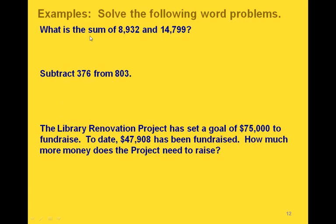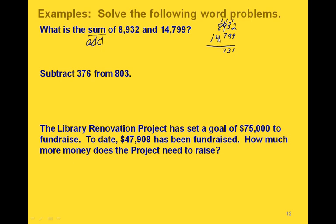Here's a word problem: what is the sum of 8,932 and 14,799? 'Sum' tells us to add. So 2 plus 9 is 11 — write down the 1 and carry the 1. Then 1 plus 3 is 4, plus 9 is 13 — write down the 3 and carry the 1. 1 plus 9 is 10, plus 7 is 17 — write down the 7, carry the 1. 1 plus 8 is 9, plus 4 is 13 — write down the 3 and carry the 1. Then 1 plus 1 is 2. So our sum is 23,731.